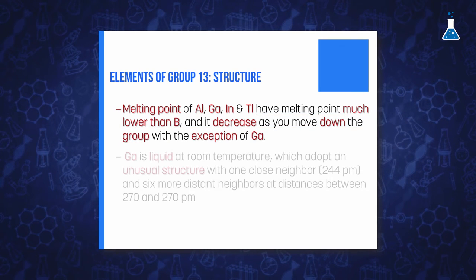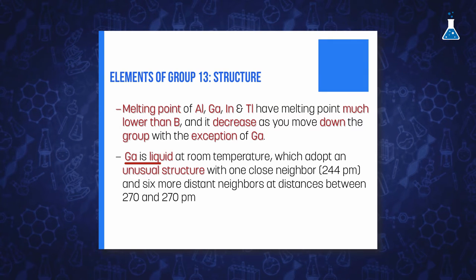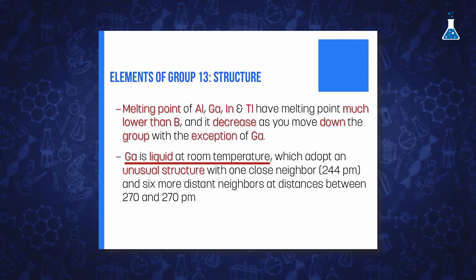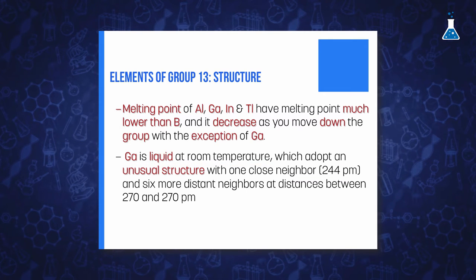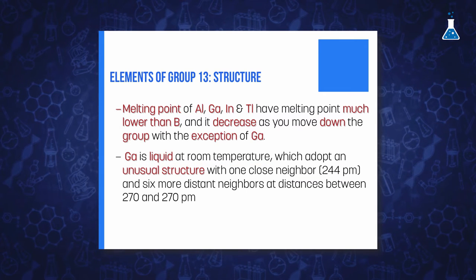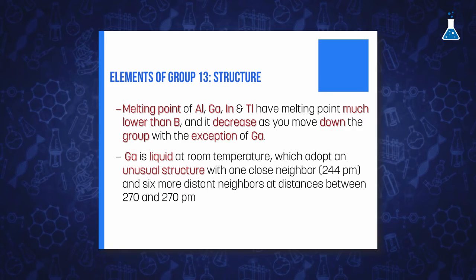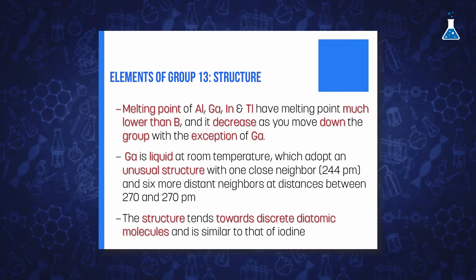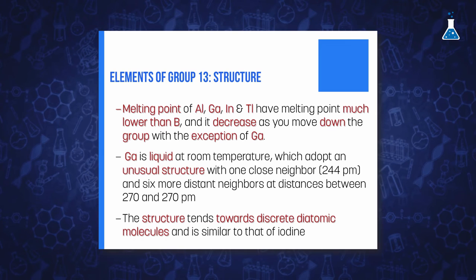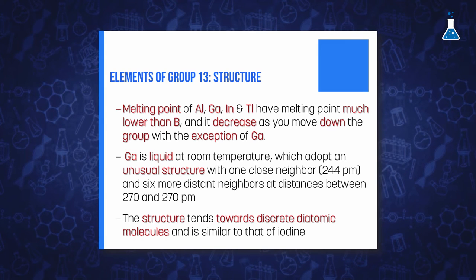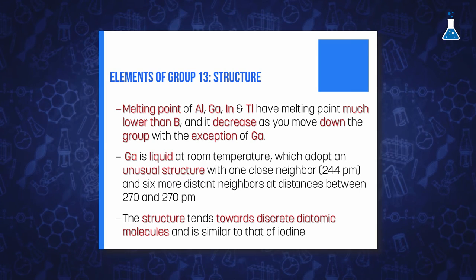However, gallium has a particularly low melting point, being liquid even at room temperature, due to the unique structure it adopts, where each atom has one very close neighbor atom while six additional atoms are located further away. It is a sort of structure quite similar in appearance to that found in iodine molecules. Interestingly, gallium, with the exception of mercury and cesium, has the widest liquid range of any element, from 30°C to 2420°C. And unlike mercury, gallium is harder to handle because it wets glass and skin.